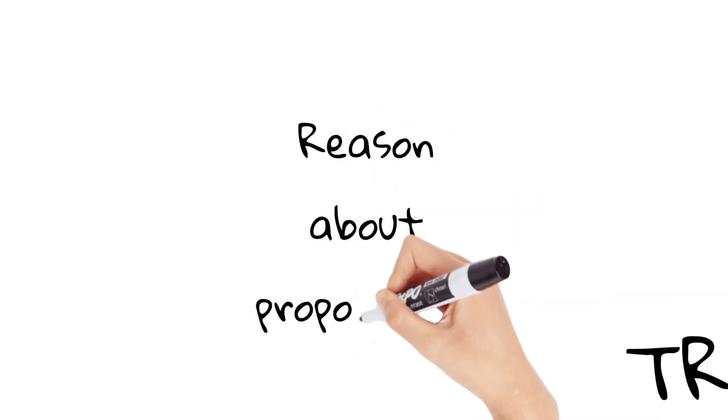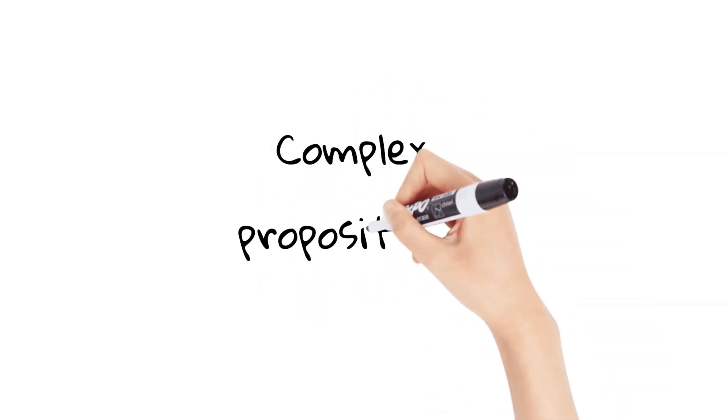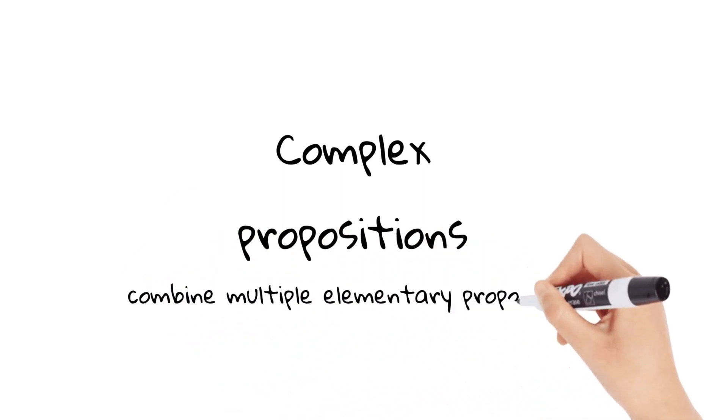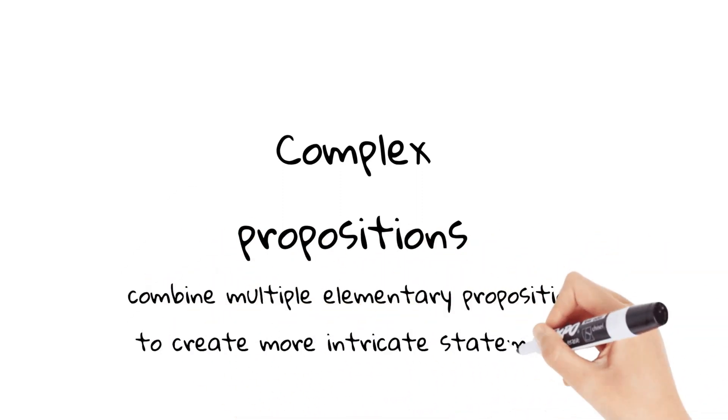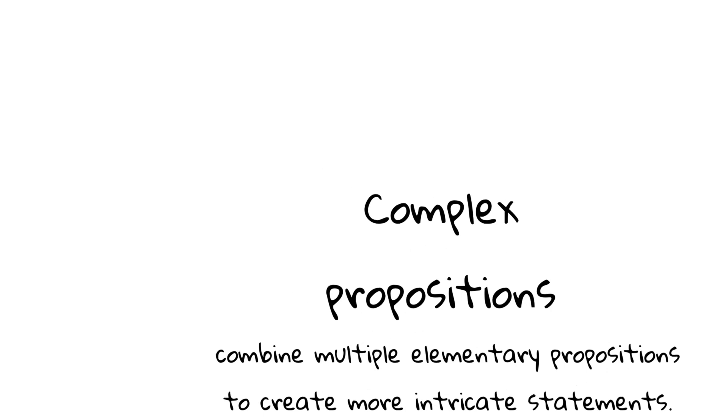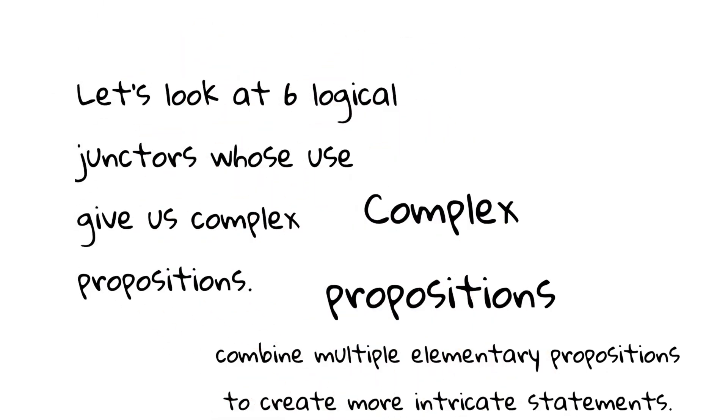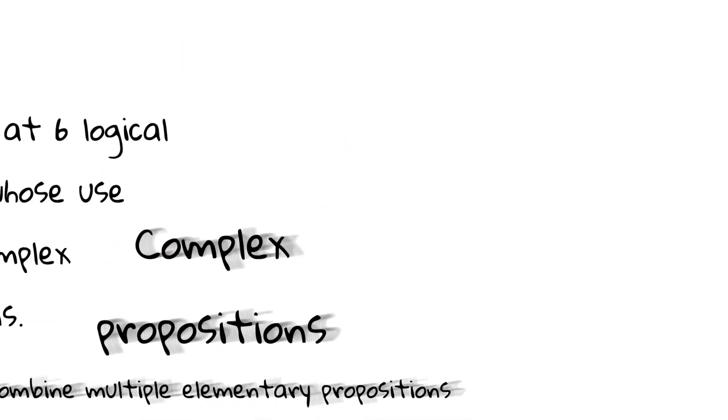Complex propositions are compound statements or claims that are formed by combining multiple elementary propositions, using logical operators such as AND, OR, and NOT. These logical operators, or logical junctors, allow us to connect simple propositions and create more intricate statements. To understand complex propositions, let's have a look at six logical junctors.